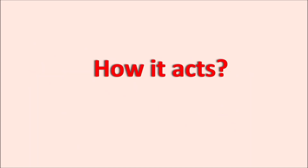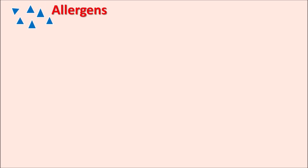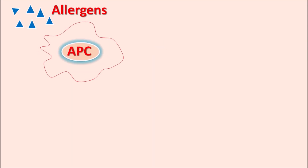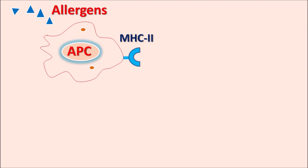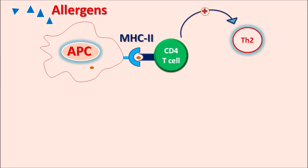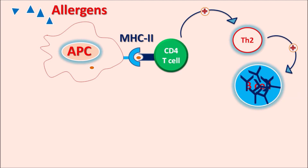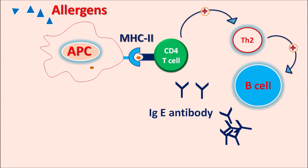Now let us see how this drug acts — first, how histamine is released by allergens. Allergens act like antigens and can be presented to the immune system by antigen-presenting cells. When allergens bind to antigen-presenting cells they are digested, and fragments are expressed on MHC class II molecules. These fragments stimulate CD4 T cells, which stimulate TH2 lymphocytes, which further activate B cells. These B cells release IgE antibodies. In this way an allergic response leads to the release of IgE antibodies.